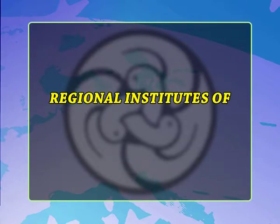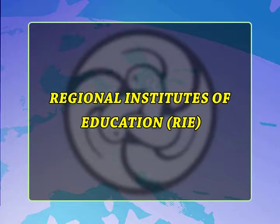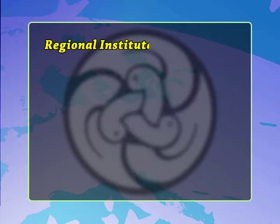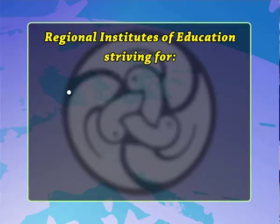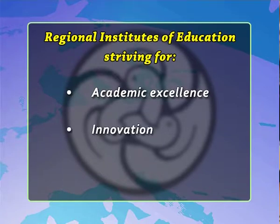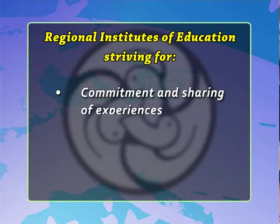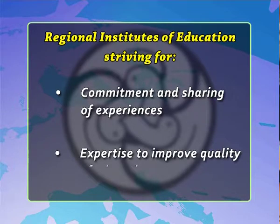The fourth constituent unit of NCERT is the Regional Institutes of Education (RIE). The RIEs at Ajmer, Bhopal, Bhubaneswar, and Mysore function as regional resource centers for school and teacher education, striving for academic excellence, innovation, professional competence, commitment, and the sharing of experiences and expertise to improve the quality of education in India. These RIEs cater to both pre-service and in-service teachers, teacher educators, and the education needs of the states and union territories under their jurisdiction.